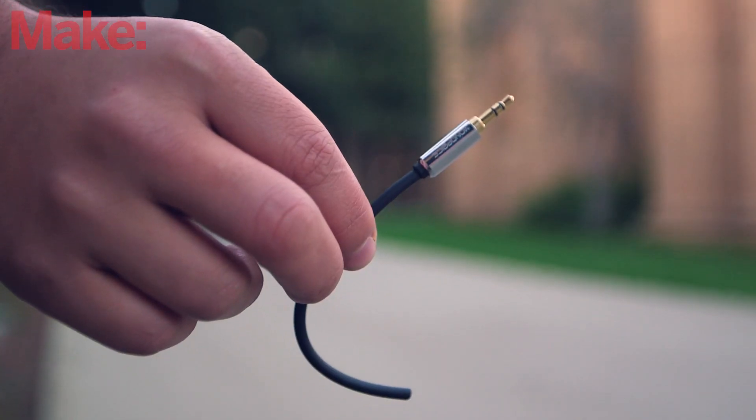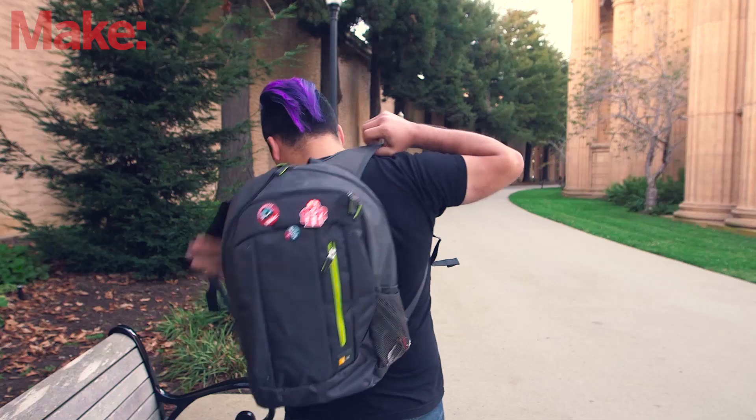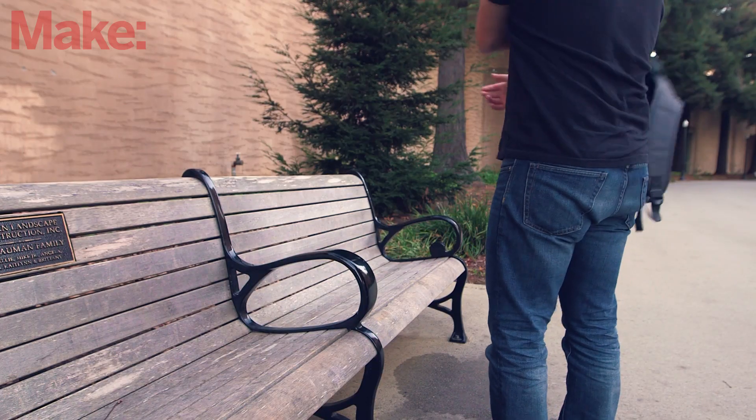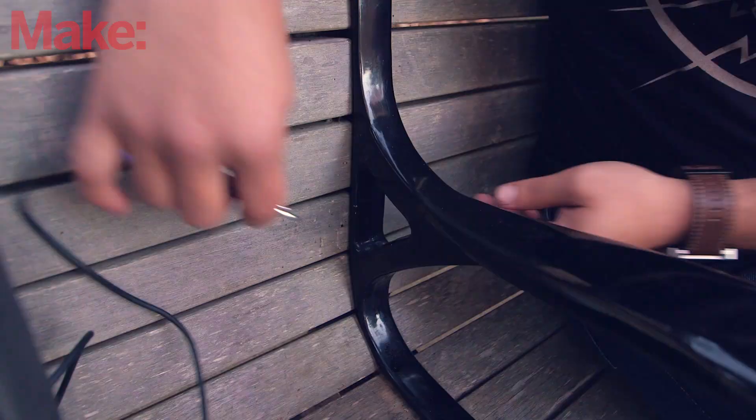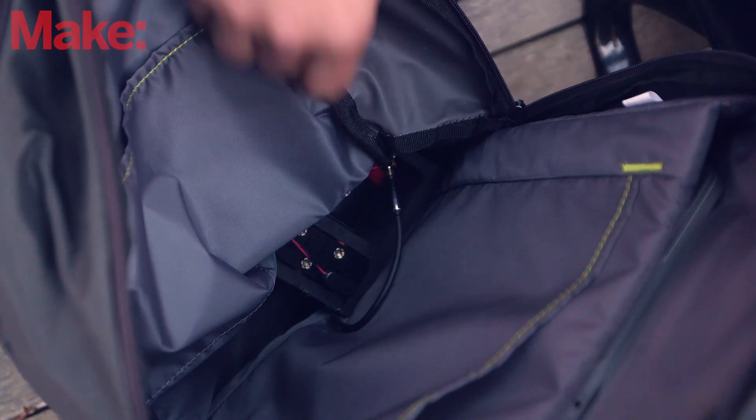To use the bag, connect the short wire and leave it in the bag as you go about your daily business. When you want to arm the alarm, such as when you're working out in a public place, plug in the longer cable into the jack on the outside of the bag and secure the loop to a chair or table leg, and then disconnect the internal plug.